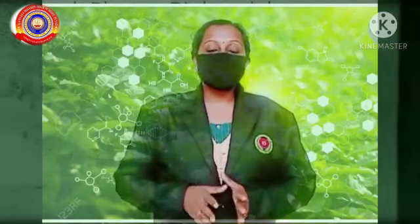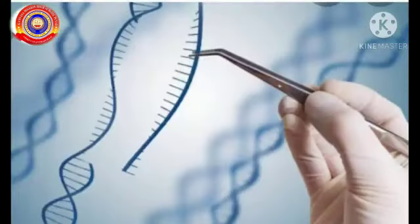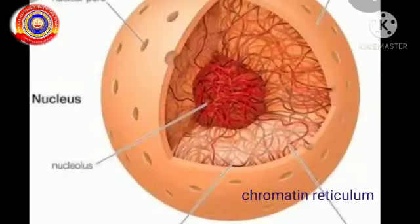Hi all, welcome to our biology classroom. Today we are going to start a new chapter: Genetics for the Future. The chapter is based on genes. Before entering into the chapter, let's recall the structure of the nucleus. The cell contains a central nucleus. The nucleus has a nuclear membrane and nucleoplasm. In the nucleoplasm we can see the nucleolus and chromatin reticulum.